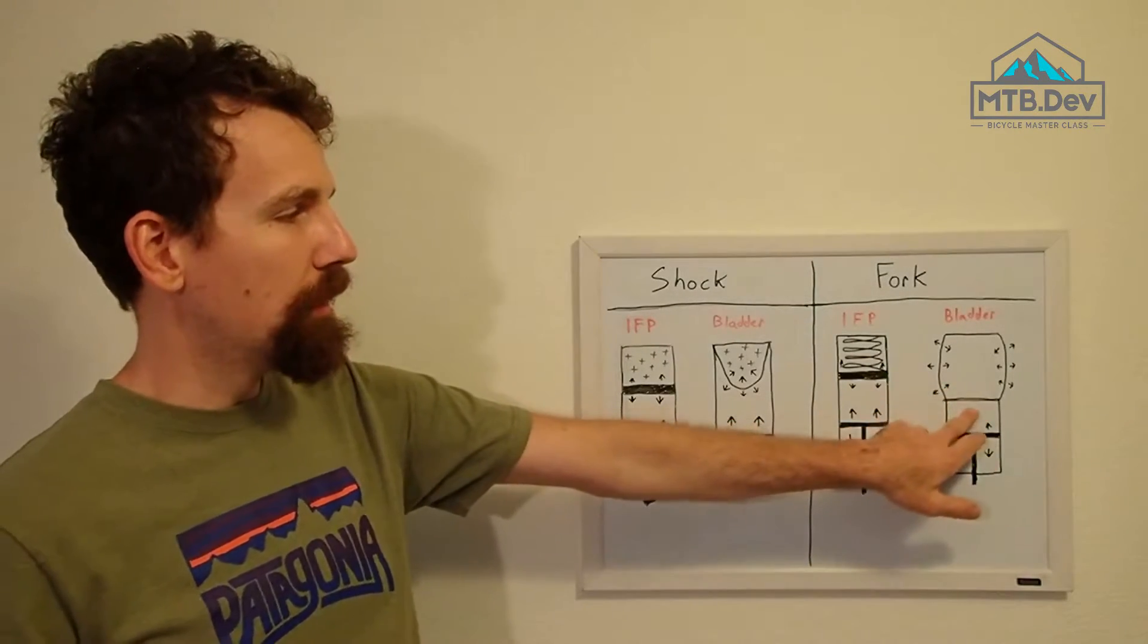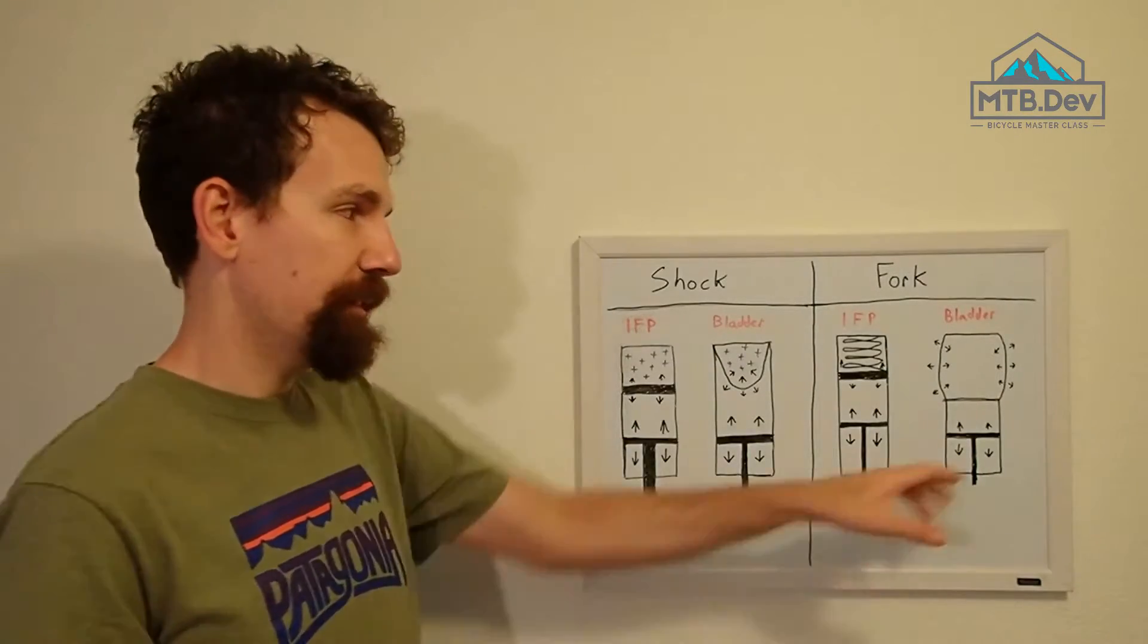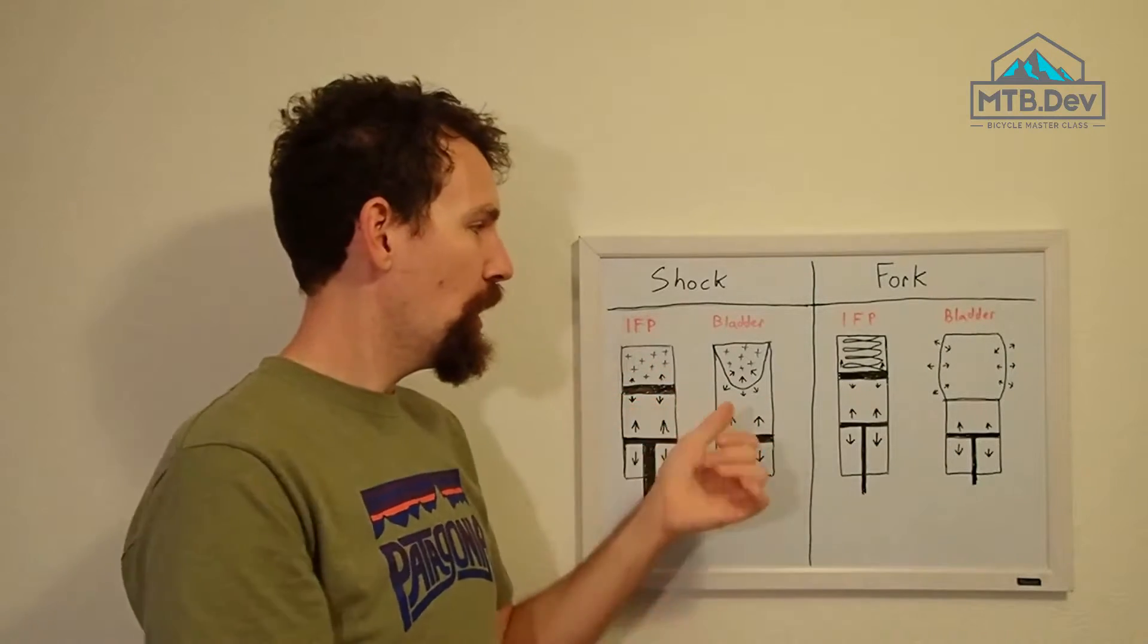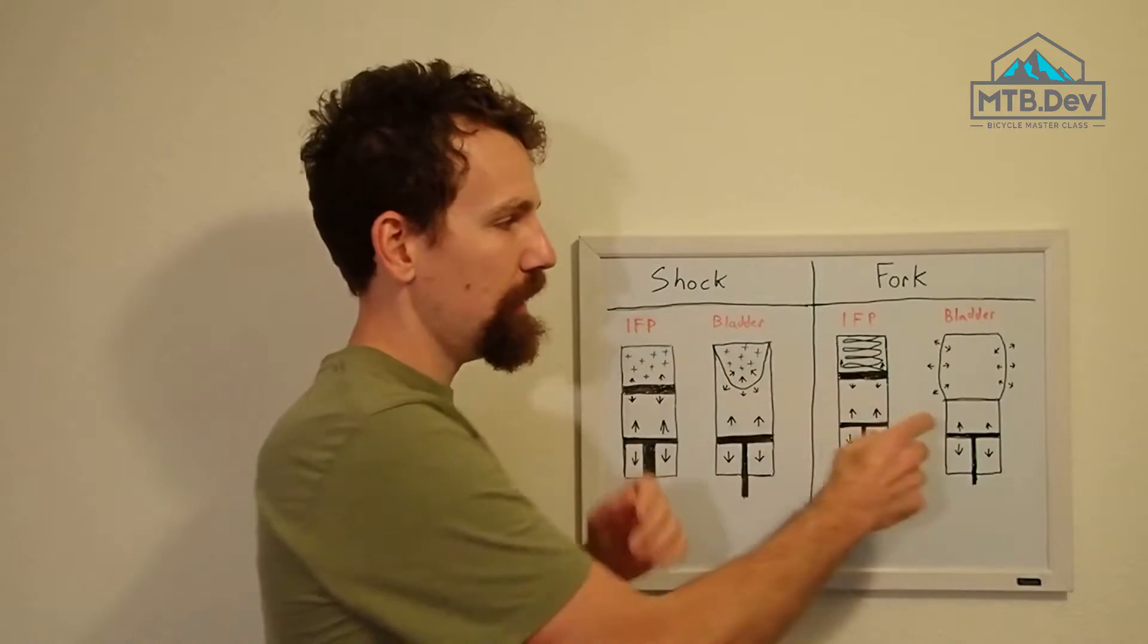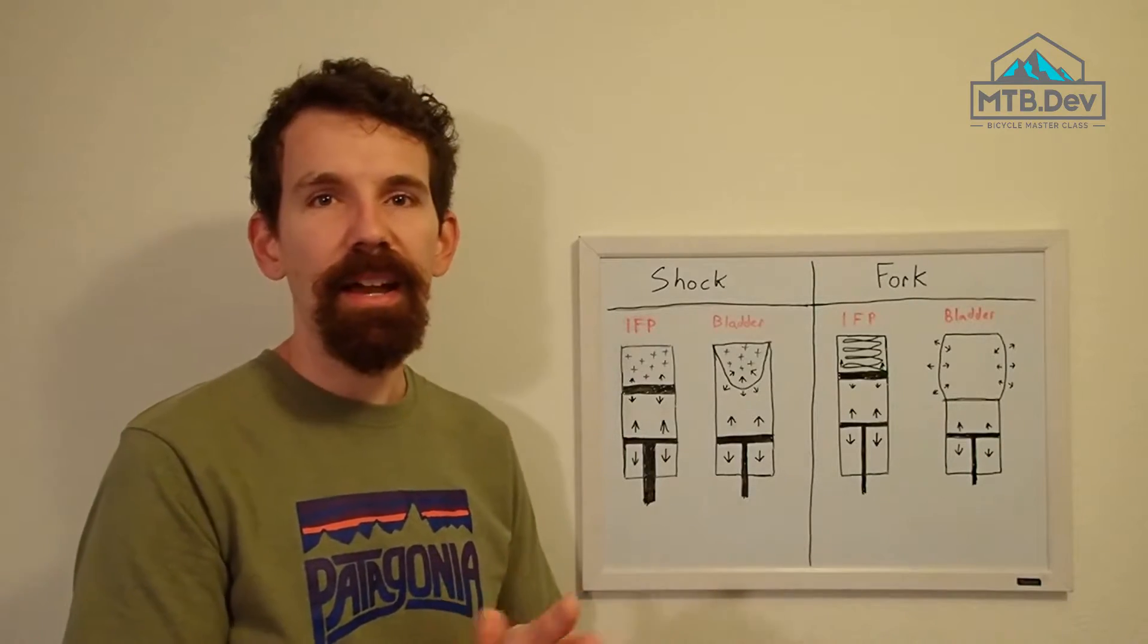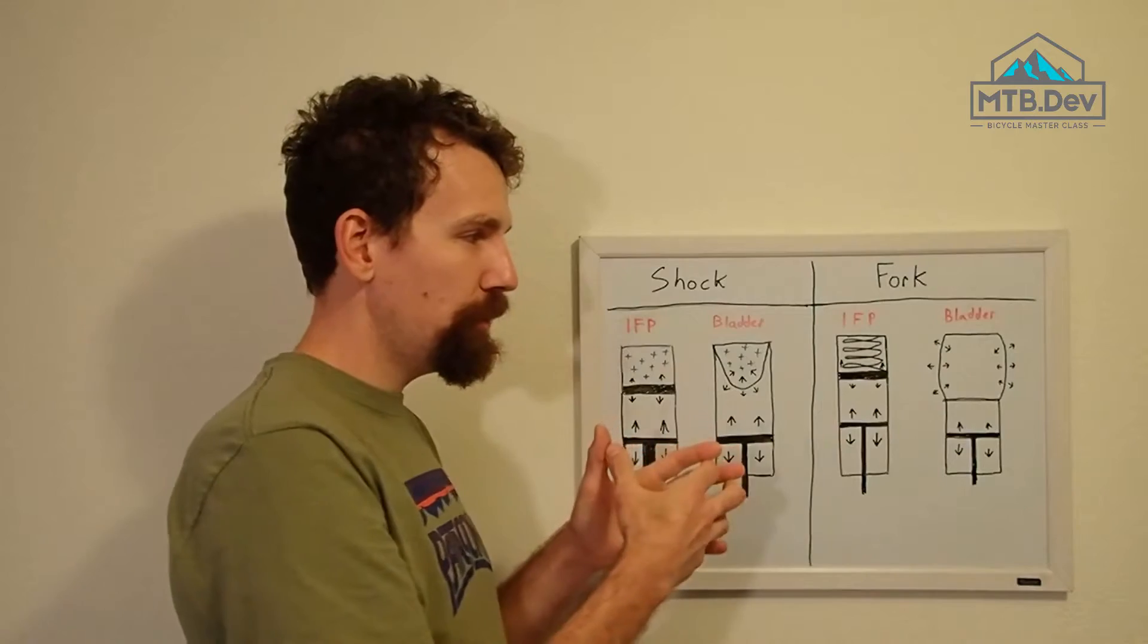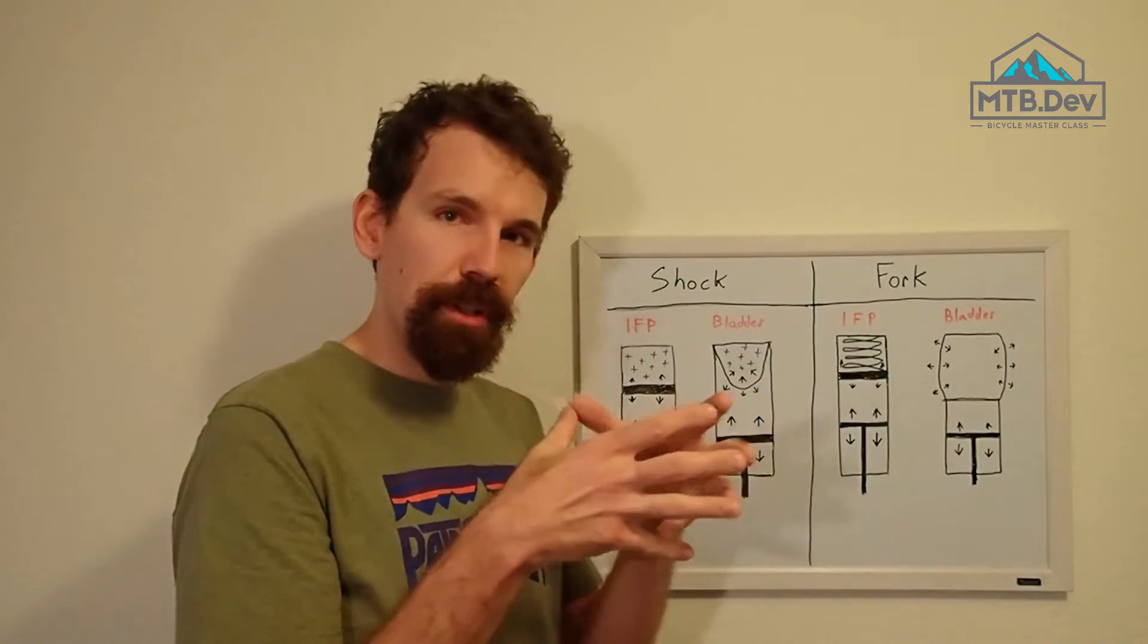In a bladder-backed system on a fork, you're generally going to have a sleeve-type bladder that's expanding out and then contracting back in rather than a bulb-style bladder, and that is not going to be backed by anything. There's not going to be any nitrogen, compressed gas, or spring backing that, so that's just going to extend and compress under its own tension.